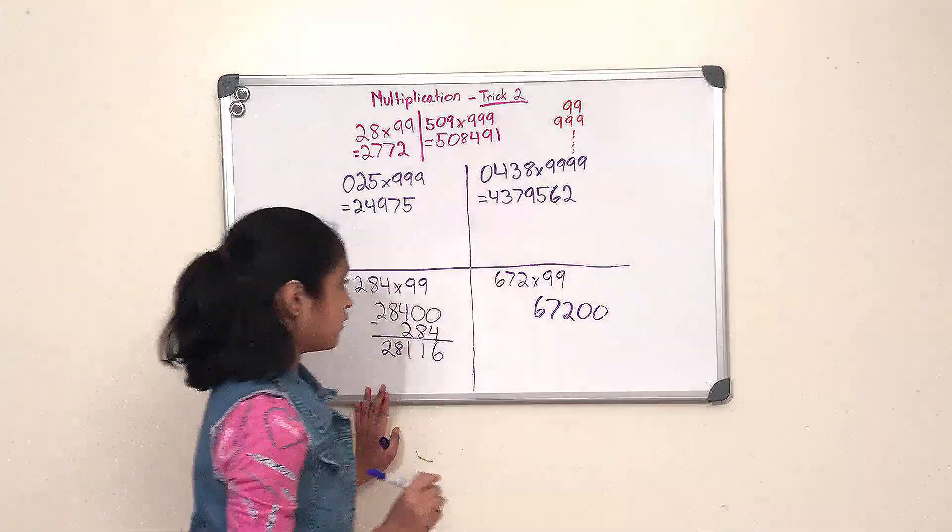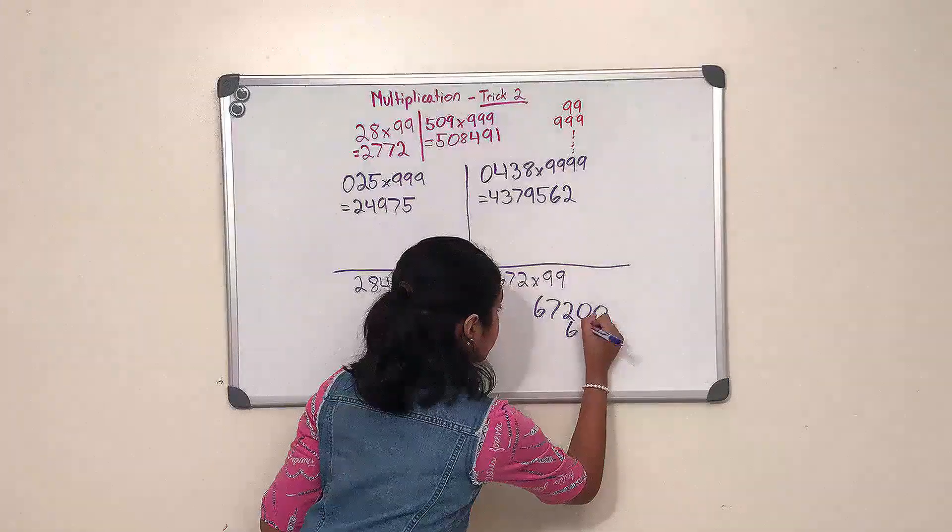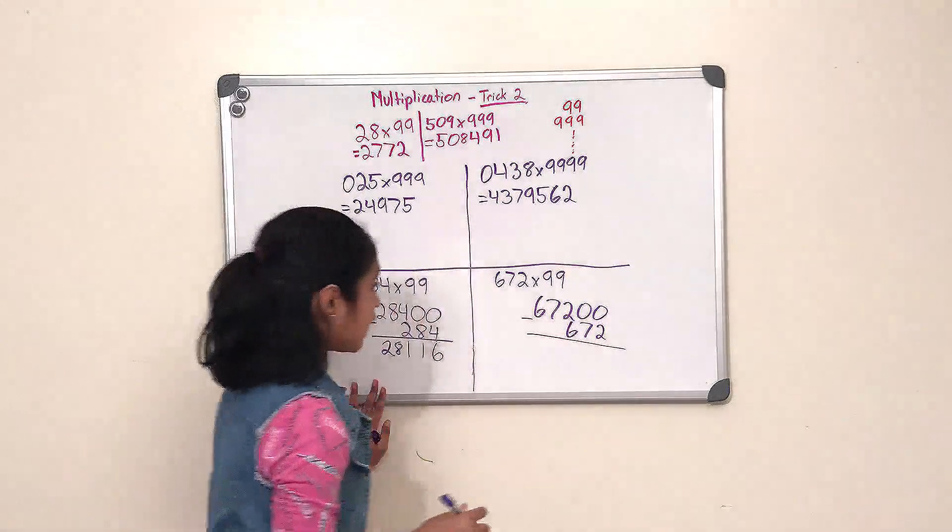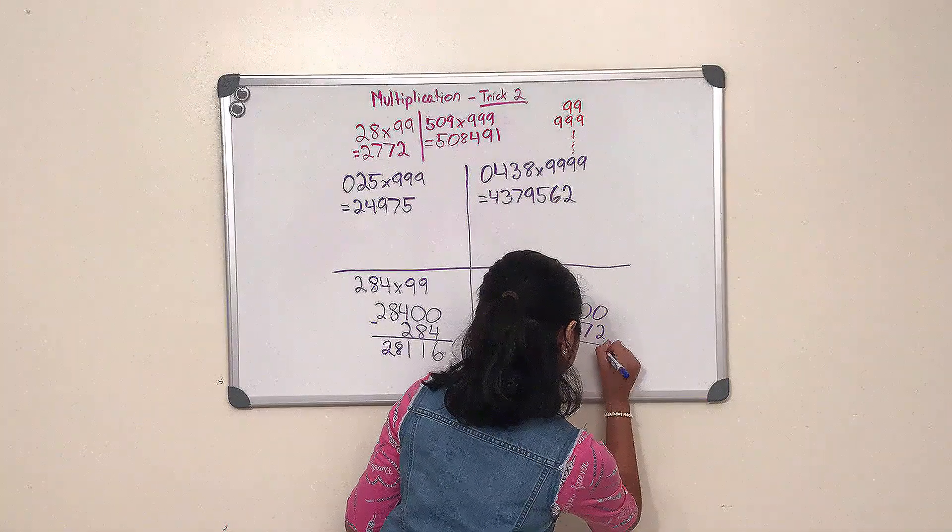So let's subtract now, and now we're going to do 10 minus 2, which is 8, and 9 minus 7, which is 2, and then 11 minus 6, which is 5.